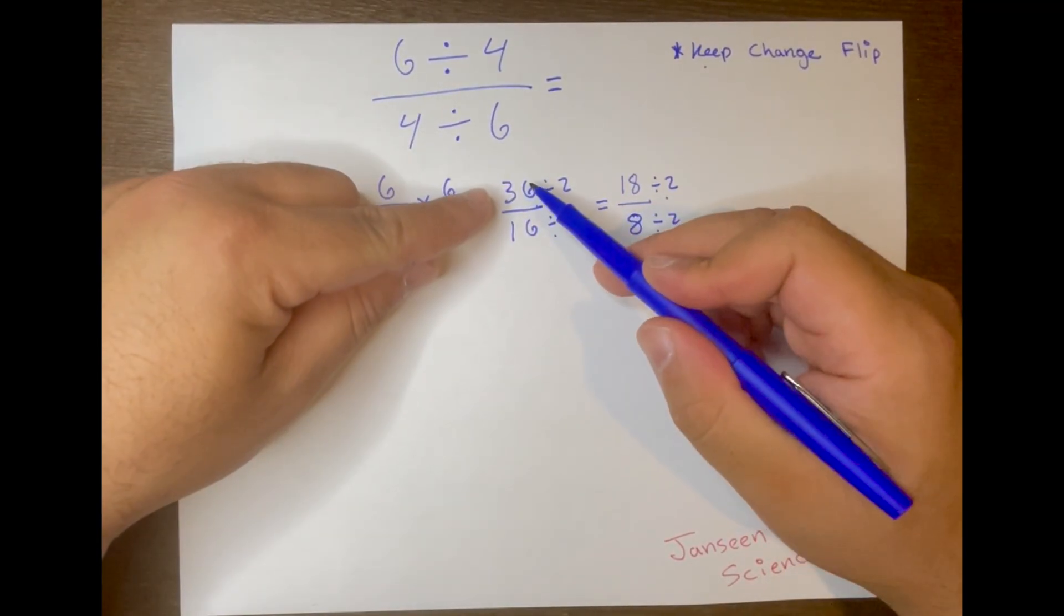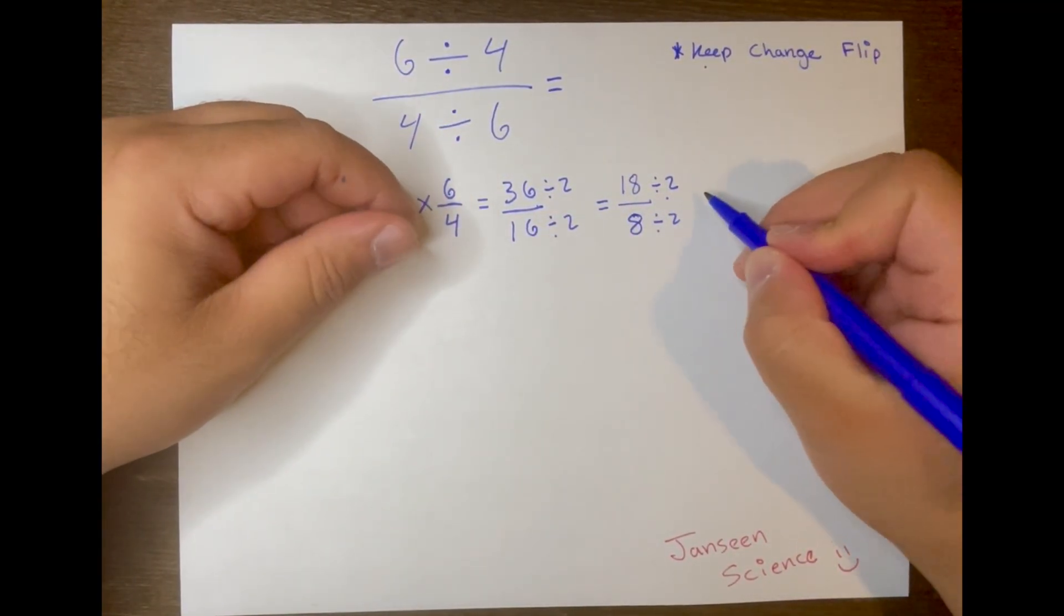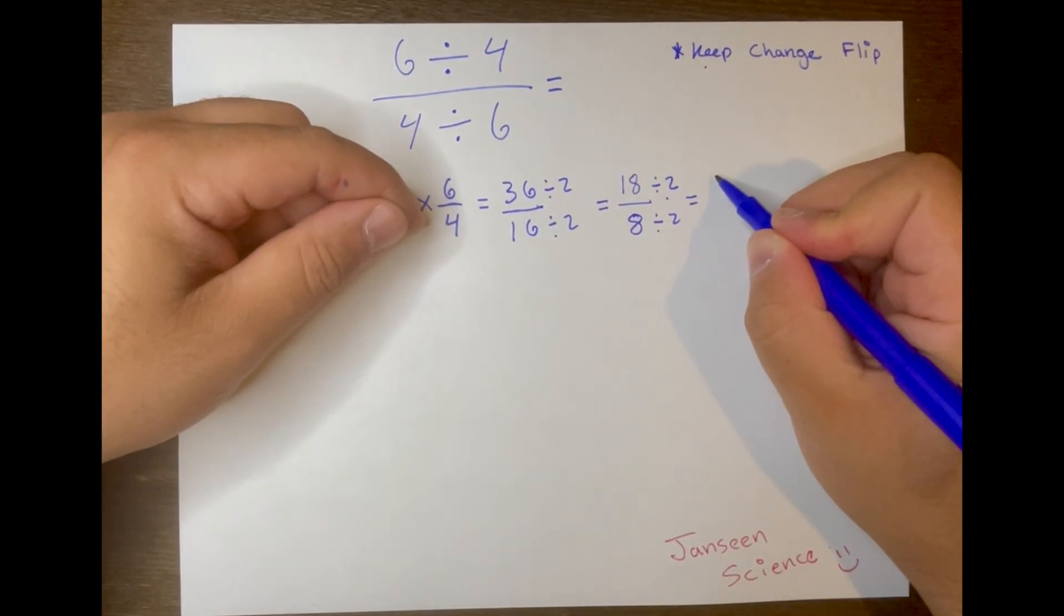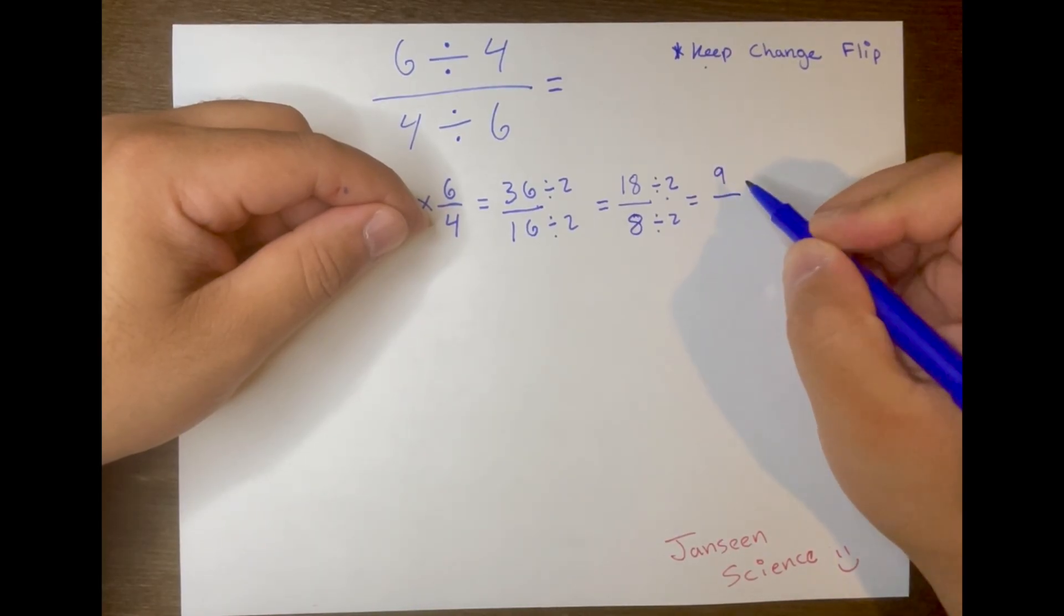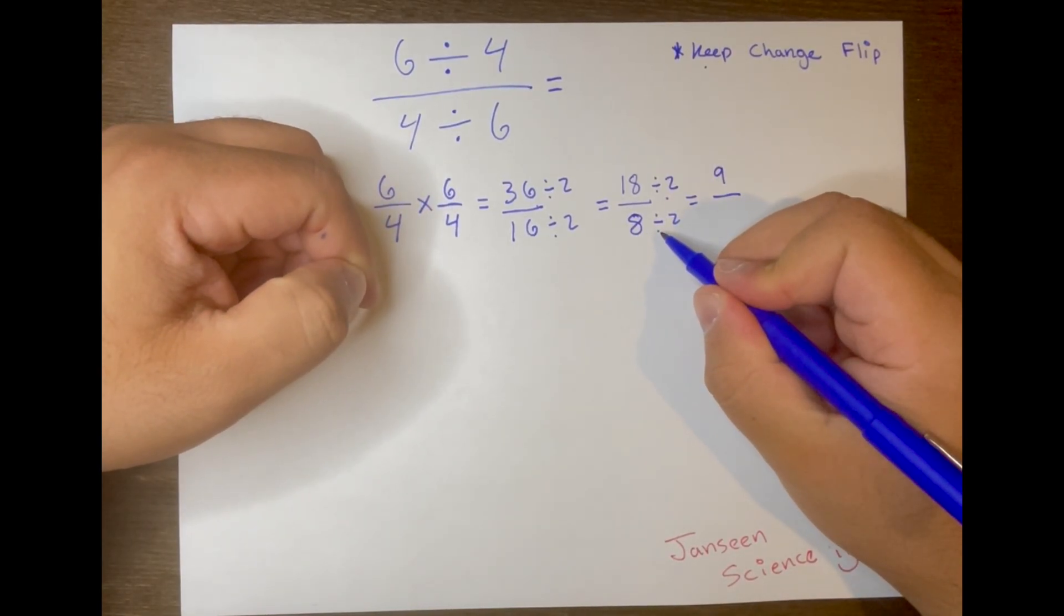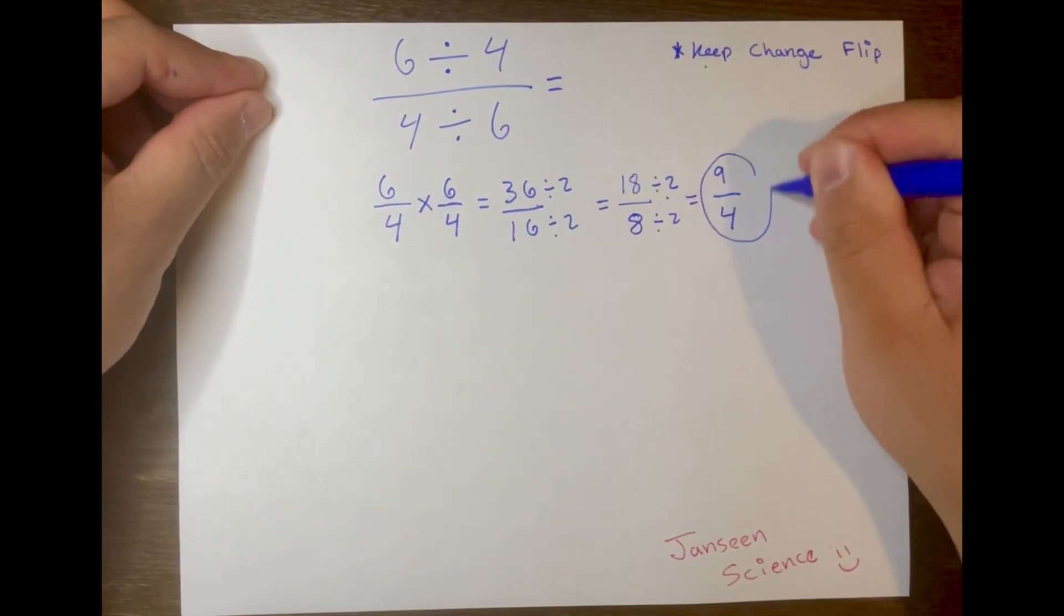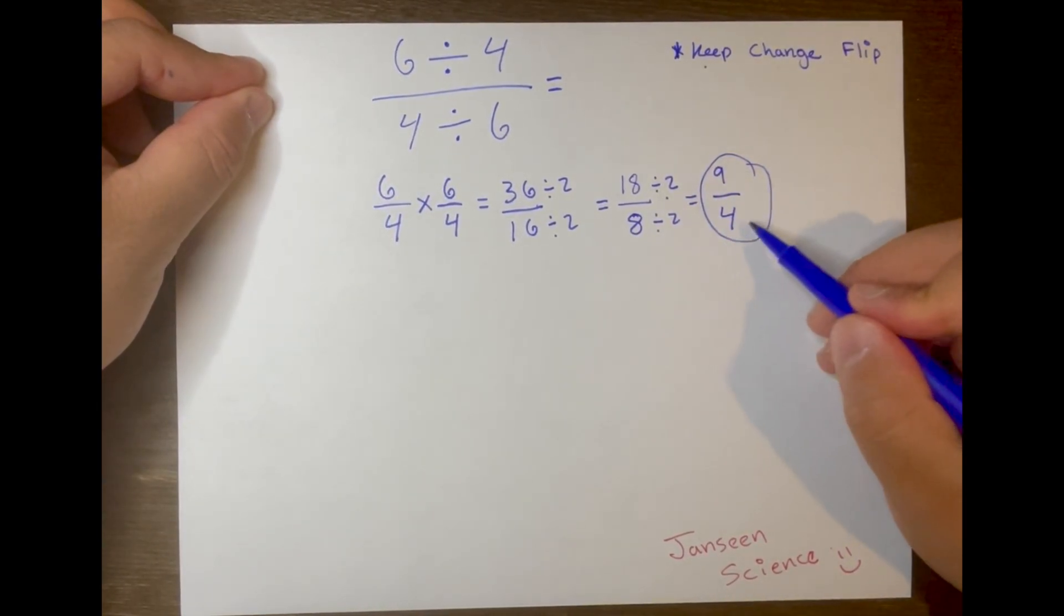Going back, both numbers are even, so we divide by 2. 18 divided by 2 is 9, and 8 divided by 2 is 4. And there you go, your answer is 9 over 4.